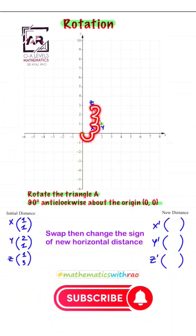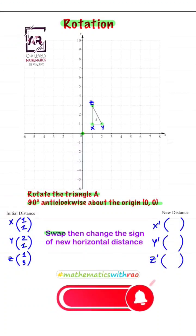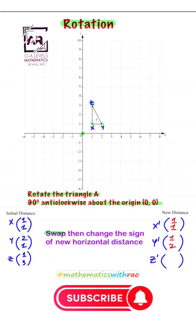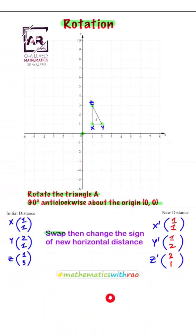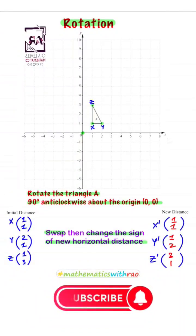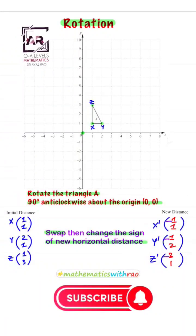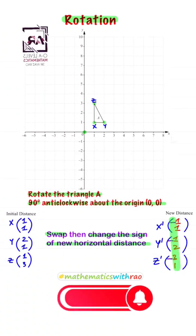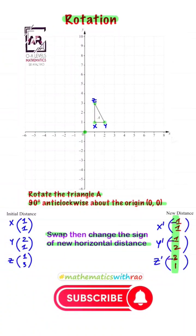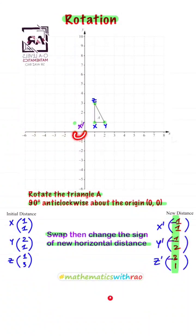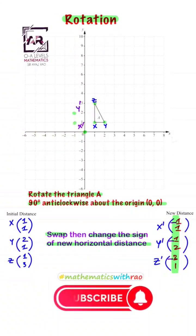Now swap the distances: first it becomes one comma one, one comma two, three comma one. Now change the sign of the new horizontal distance: plus one becomes minus one, plus one becomes minus one, plus three becomes minus three. Plot these new distances from the center of rotation zero comma zero. For vertex X dash it is minus one comma one, for vertex Y dash it is minus one comma two, for vertex Z dash it is minus three comma one.